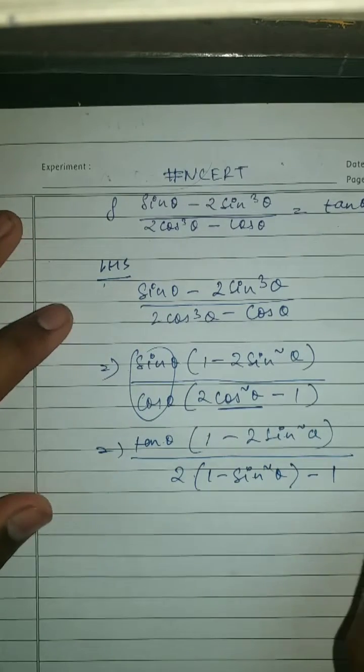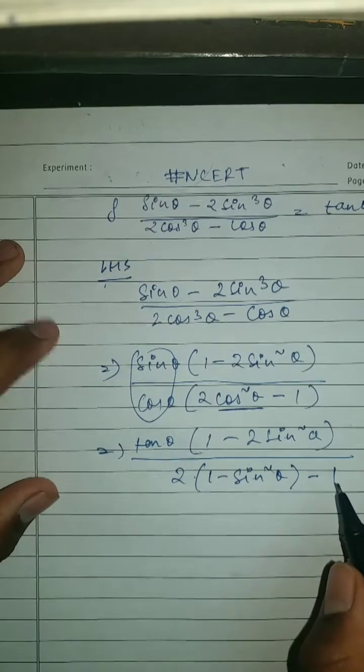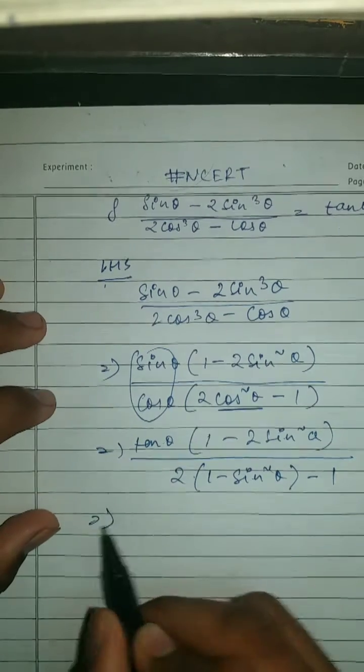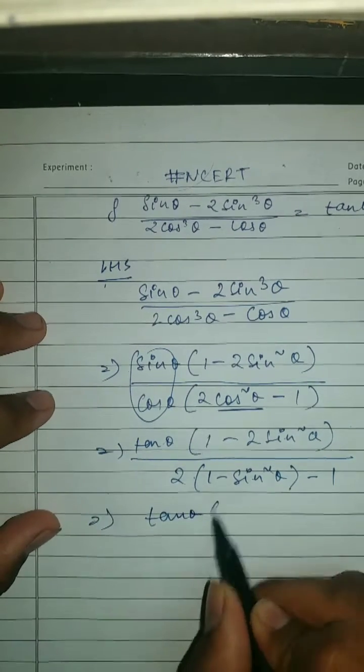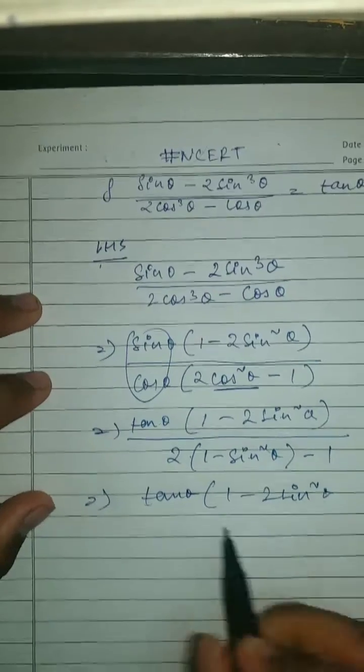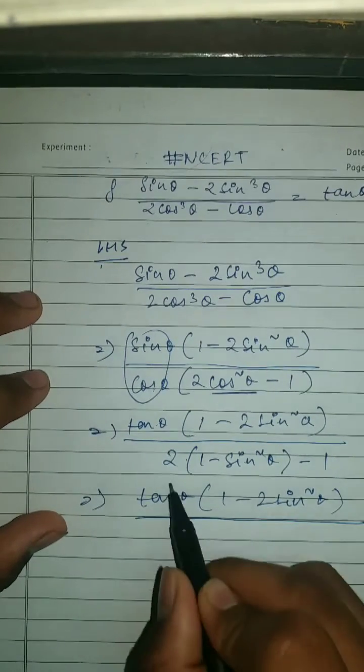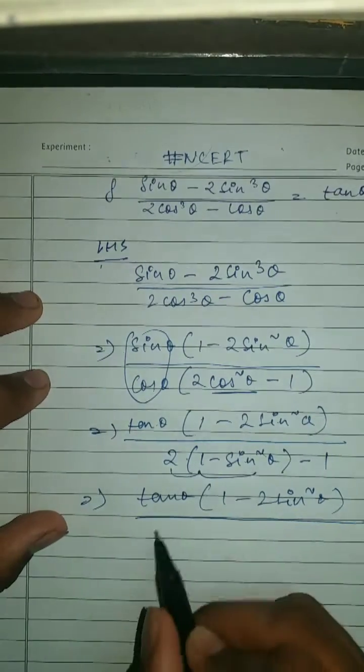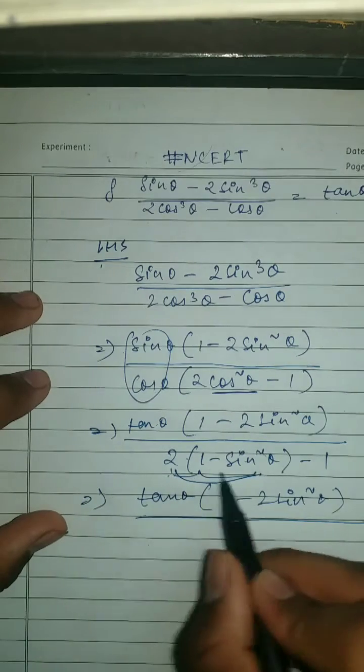Once we got this, what we're going to do here is tan theta times 1 minus 2 sine square theta upon 2 minus 2 sine square theta minus 1.